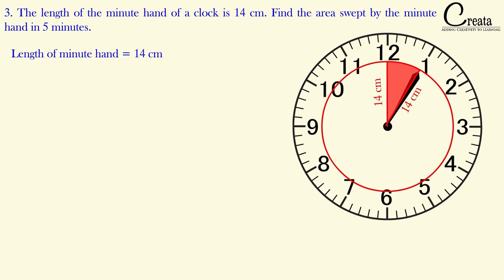This shaded region looks like a sector — the region between two radii and the arc. The minute hand is the radius for this circle, so these two line segments are the two radii and this is the arc. To apply the formula for area of the sector, we need the angle theta and the radius. The radius of 14 cm is given; the only missing dimension is angle theta, so let's calculate it.